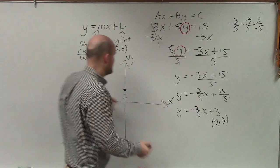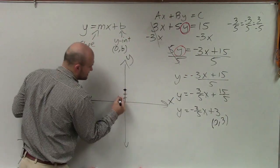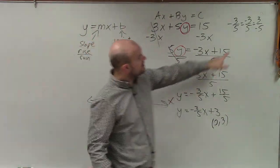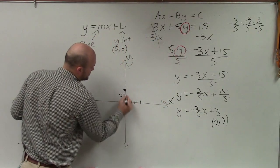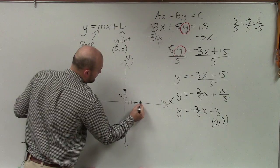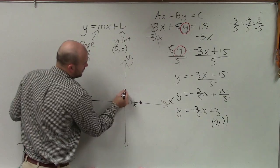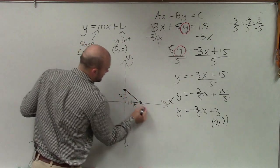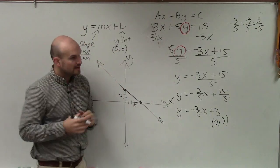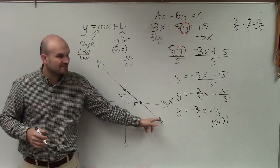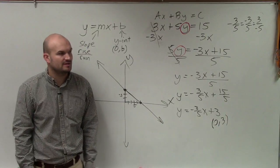So if the change in the y-coordinates is negative 3, I'm going to go down 3. And if the change in the x-coordinates is positive 5, I'm going to go to the right 5. 1, 2, 3, 4, 5. So we go down 3 over 5. That creates my slope triangle, which now helps me produce my graph. And you can just continue that slope to keep on finding more points on the graph if you need to.